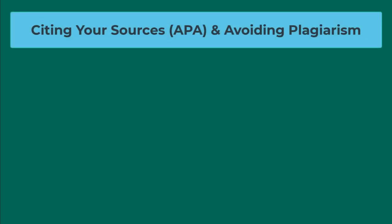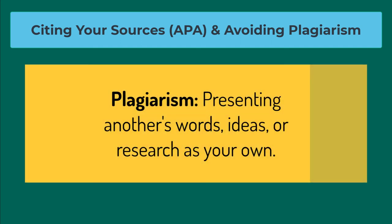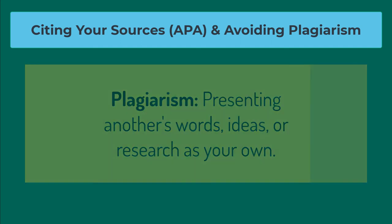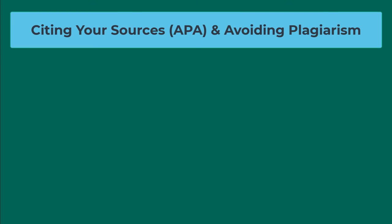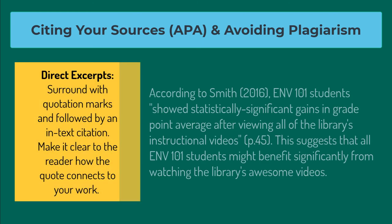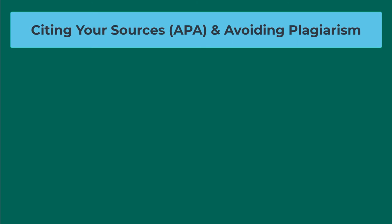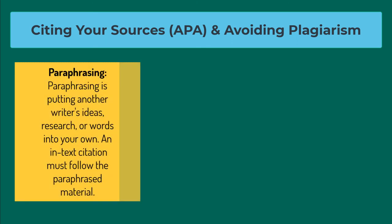Now that we've discussed finding sources, we need to discuss citing sources. Failure to cite often results in plagiarism, which is presenting another's words, ideas, or research as your own. Fortunately, the easiest way to avoid plagiarism is to properly quote, paraphrase, and cite your sources. Direct excerpts should be surrounded by quotation marks and followed by an in-text citation. Make it clear to the reader how the quote connects to your work. Putting another author's words, research, or ideas into your own words is paraphrasing. Like a quote, this requires an in-text citation.